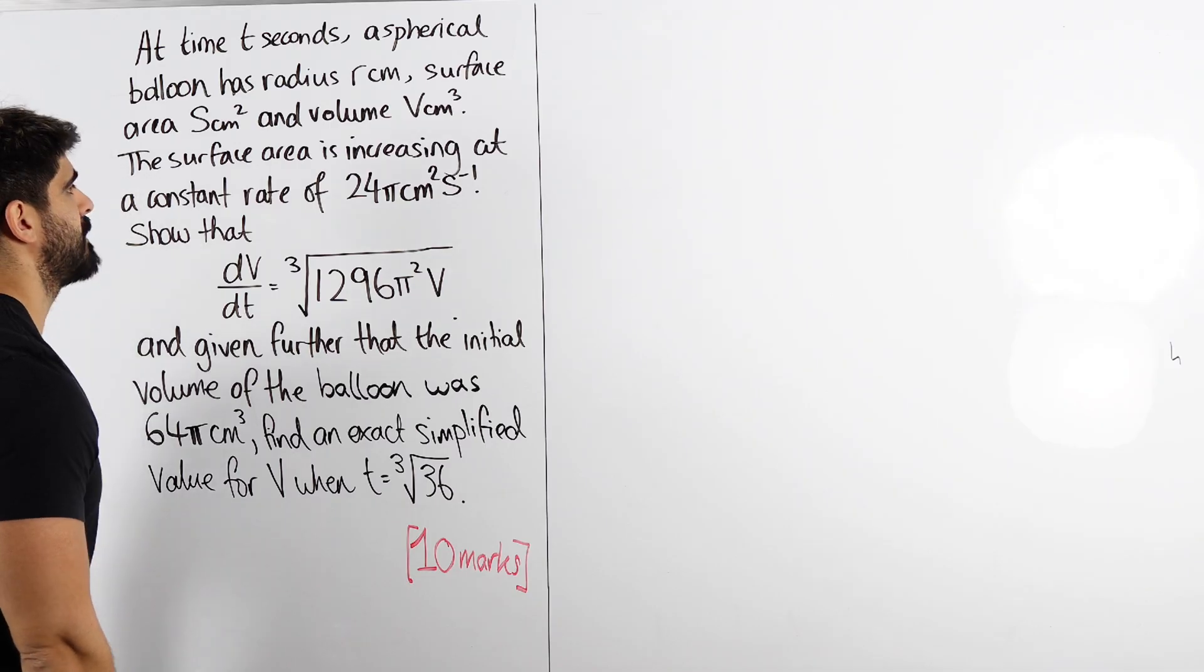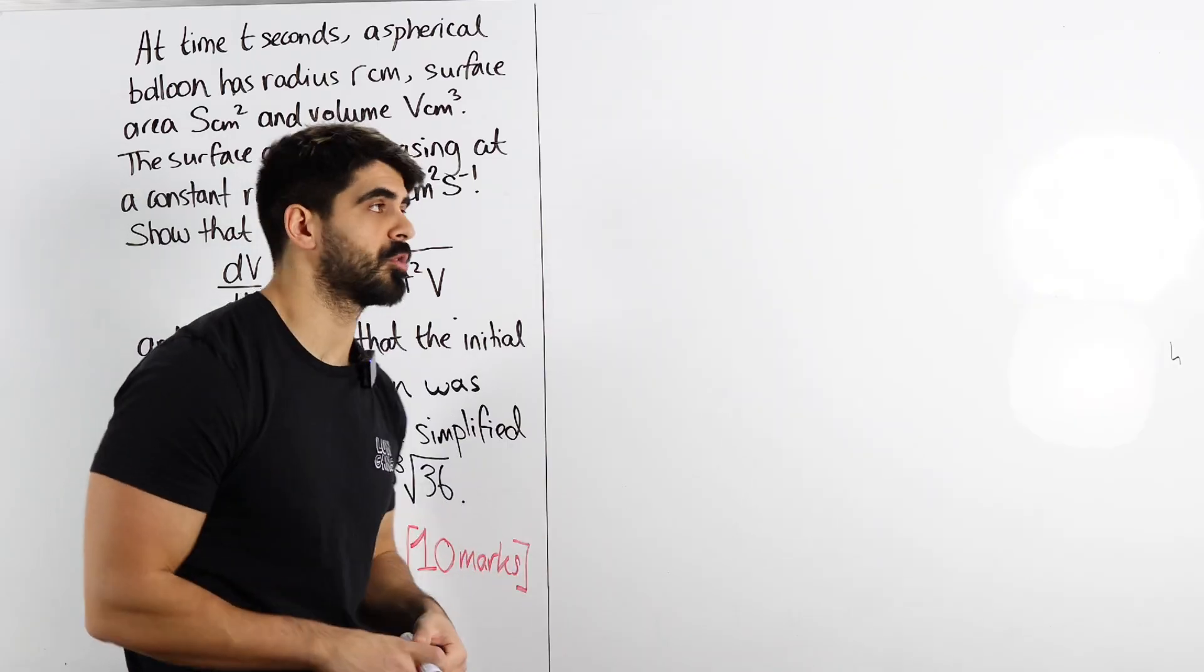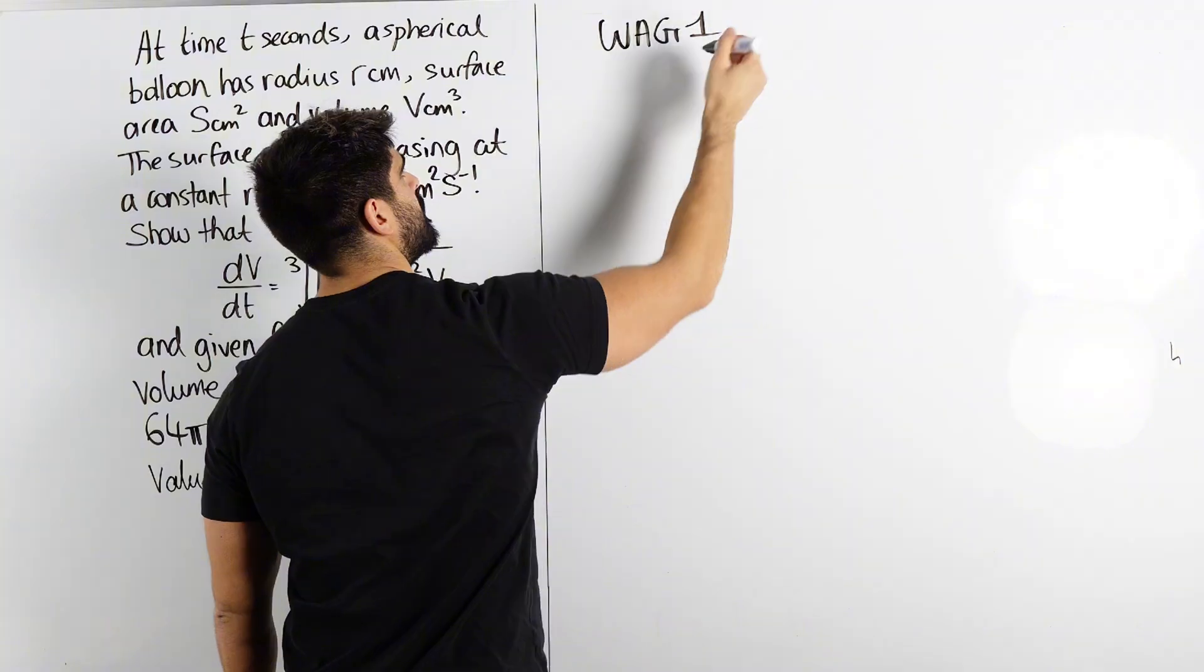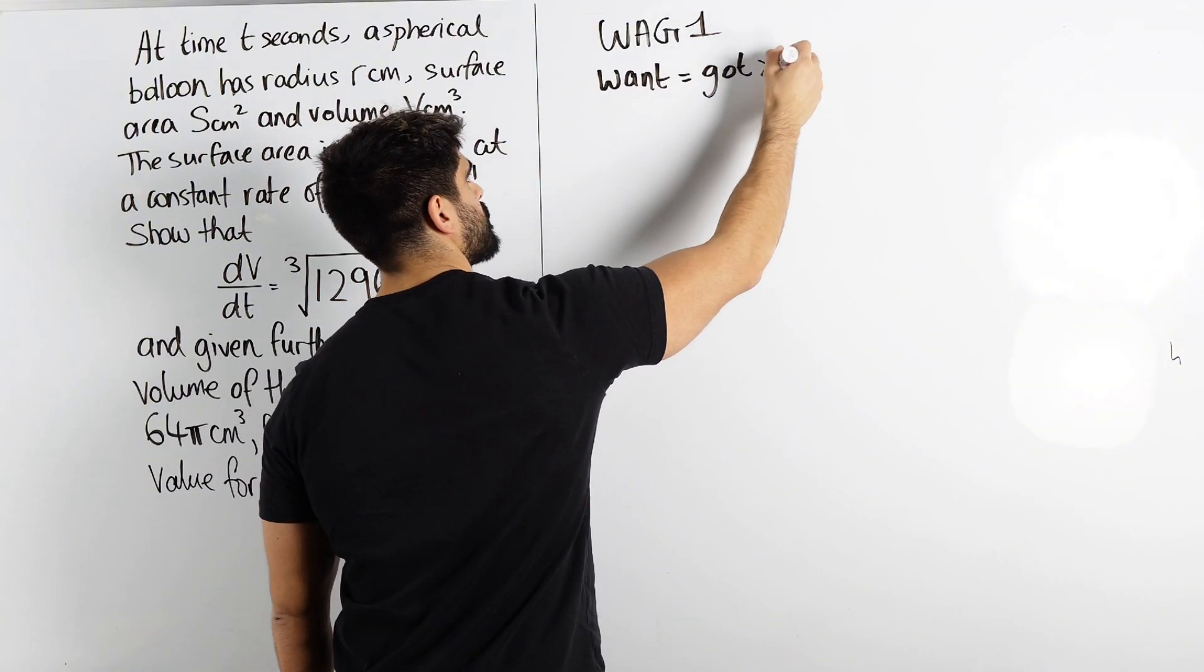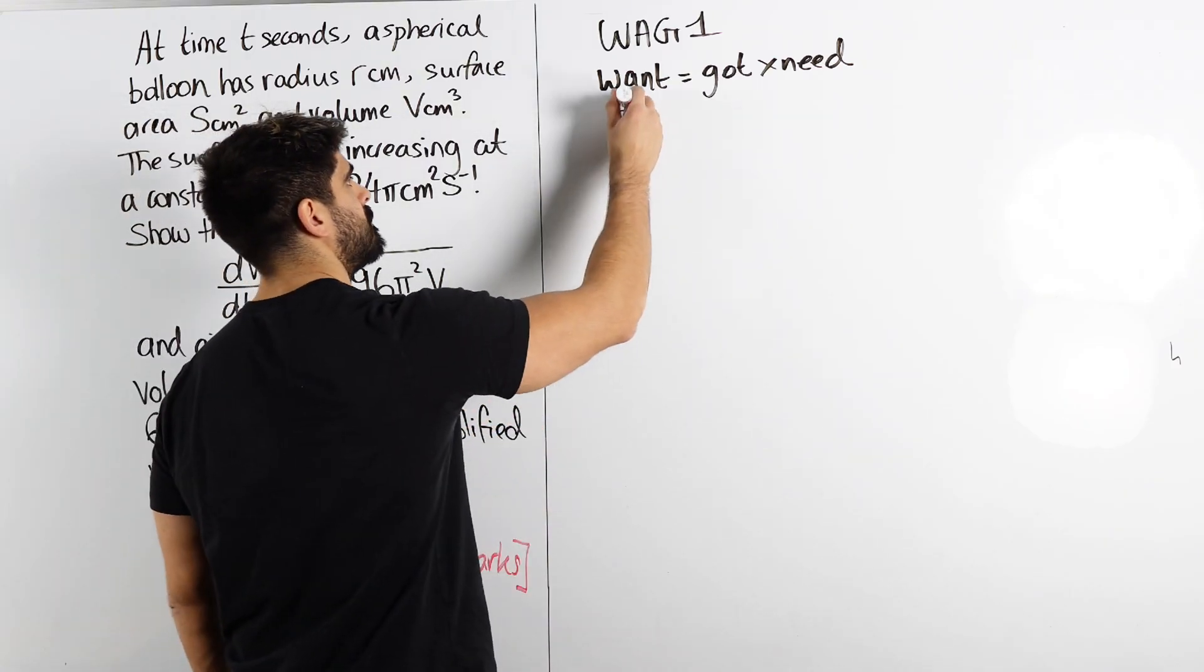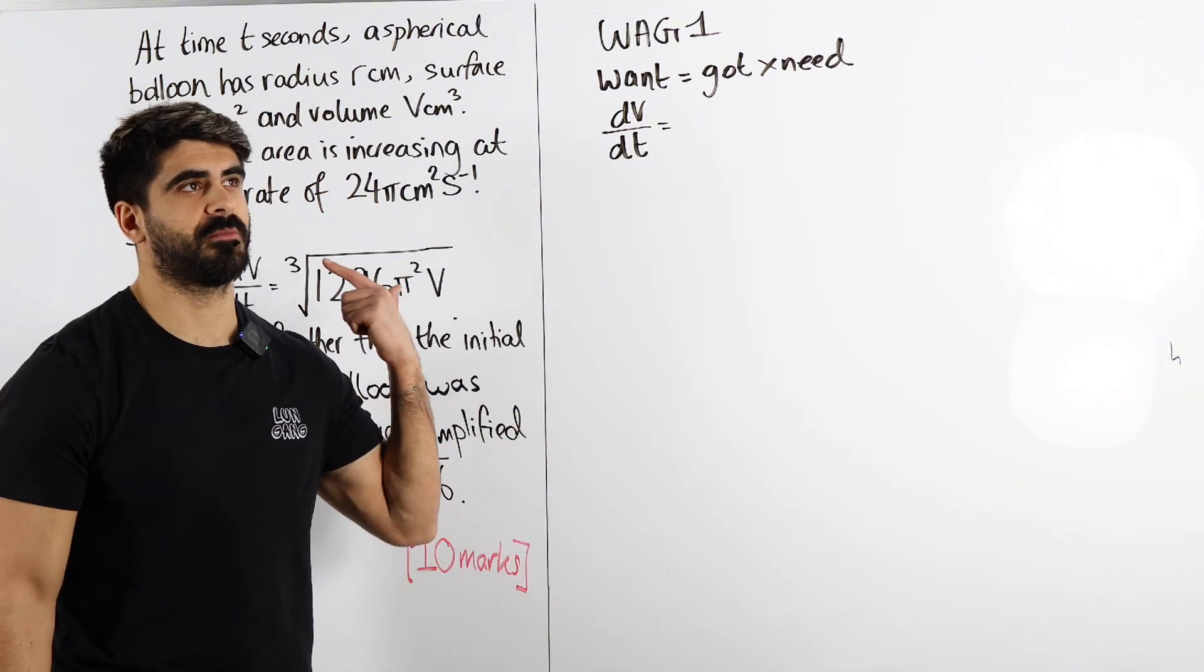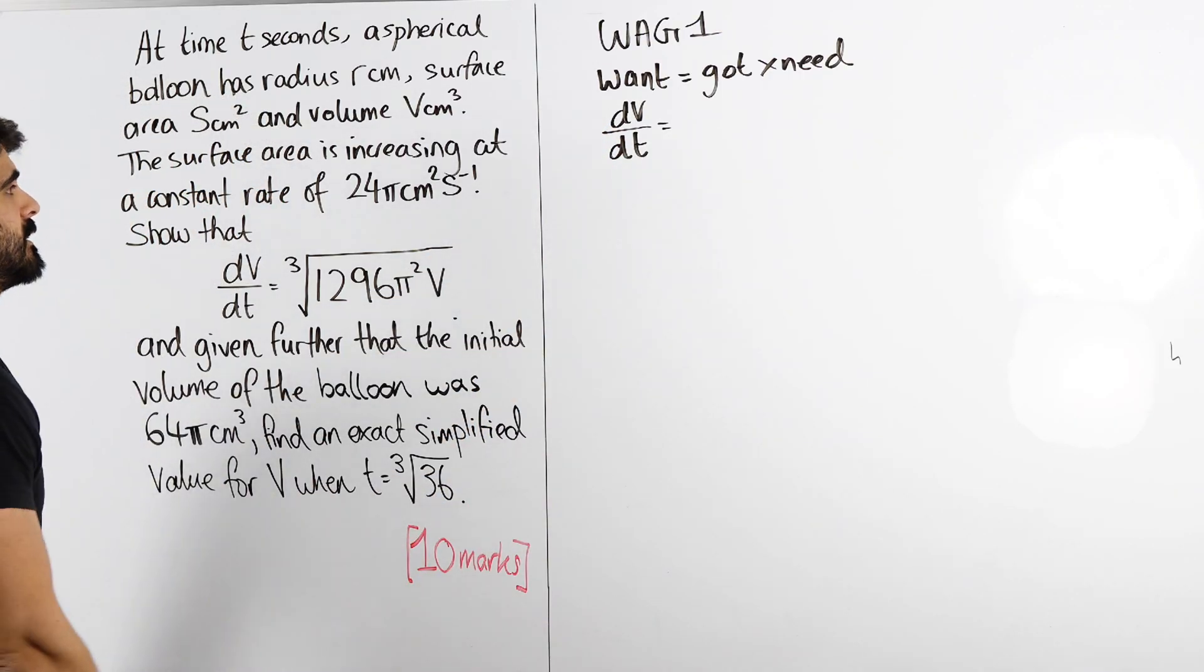So they want us to find dv by dt. And they have given us some extra information. This is a classic Lundgang hua guan formula. What is the hua guan formula? Is what you want equals what you've got multiplied by what you need. Basically, chain rule. So, they want dv by dt. I uploaded two really difficult differential equations where I use the hua guan formula. Go and check those out.